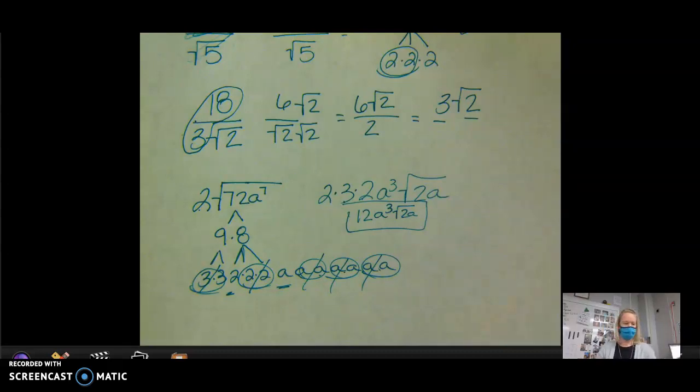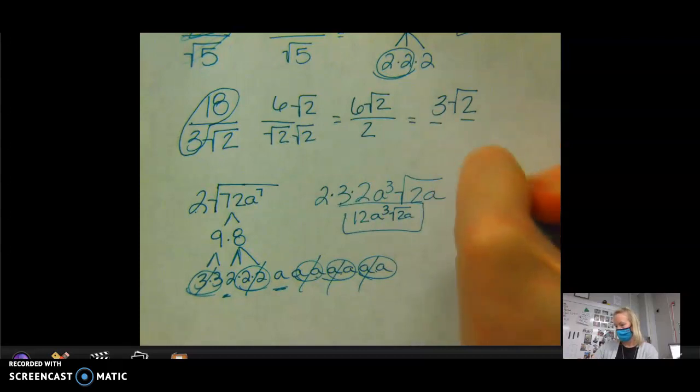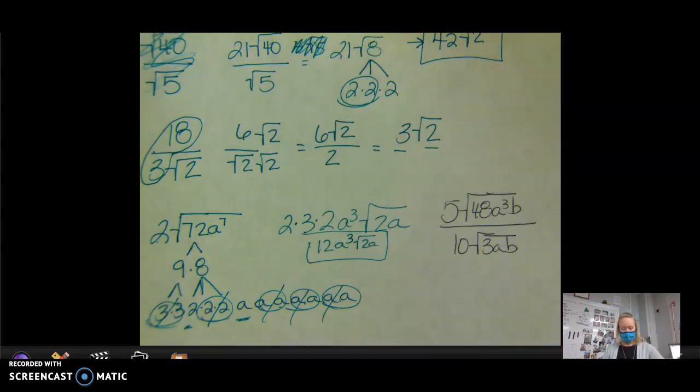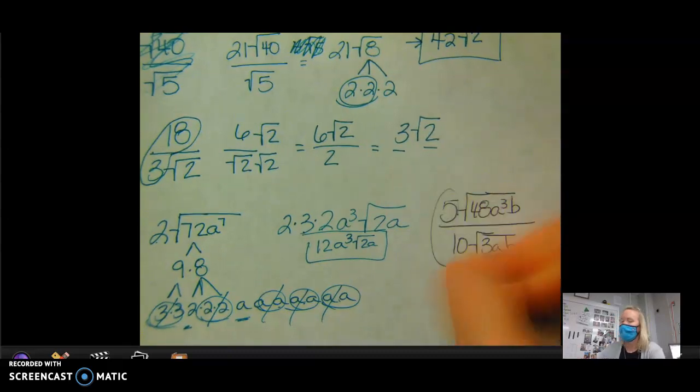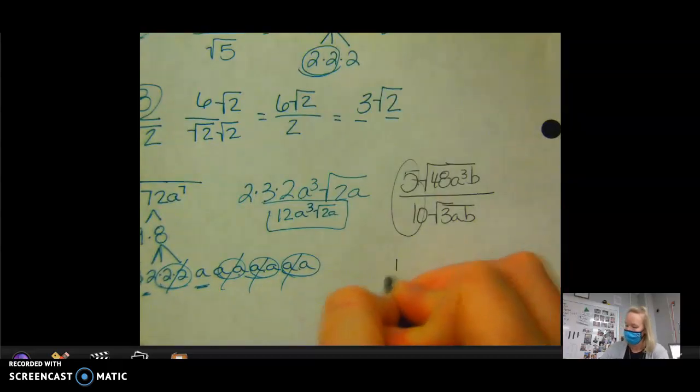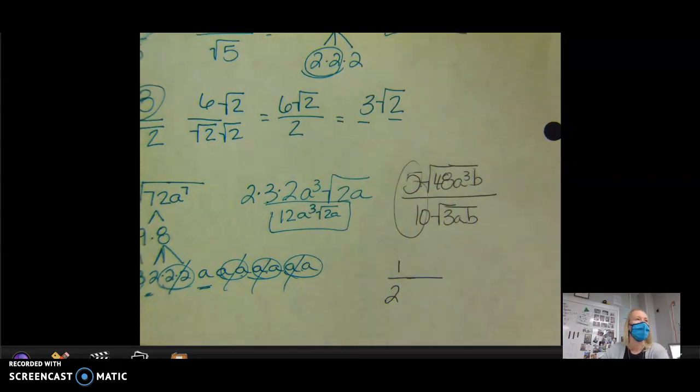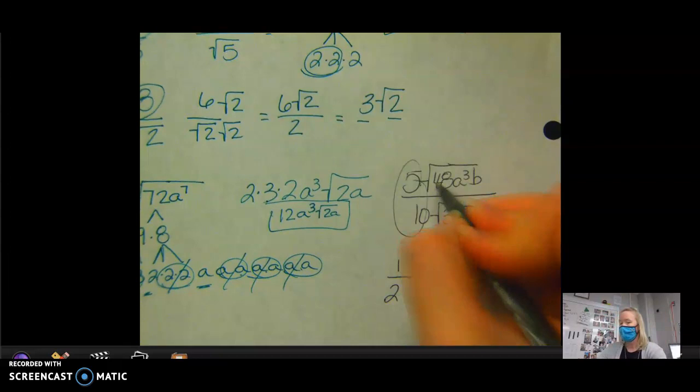So again, you can rationalize the denominator, or what I find easier, again, is to reduce. 5 over 10 reduces to what? 1 over 2, right? Does 48 divide by 3? Yes, and since they're both in radicals. So remember, you can multiply outside and outside, inside and inside, same thing with division. Outside and outside divided by, and then inside and inside. And when I'm talking about inside, I mean under the radical. What does 48 divide by 3? 16.